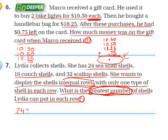So the factors of 24: 1 times 24, 2 times 12, 3 times 8, 4 times 6. What about 7? No. What about 8? Yes — I've already used it, so I know I've got all the factors of 24.